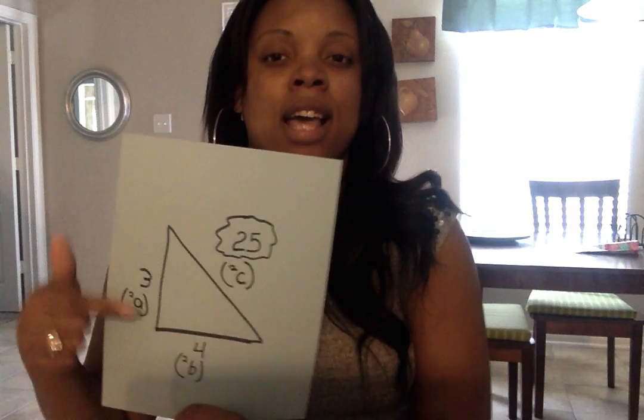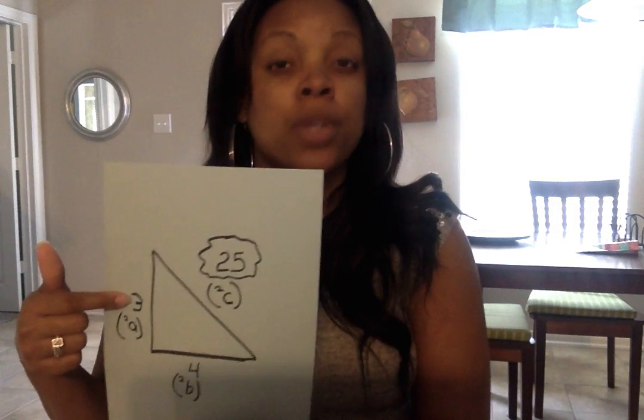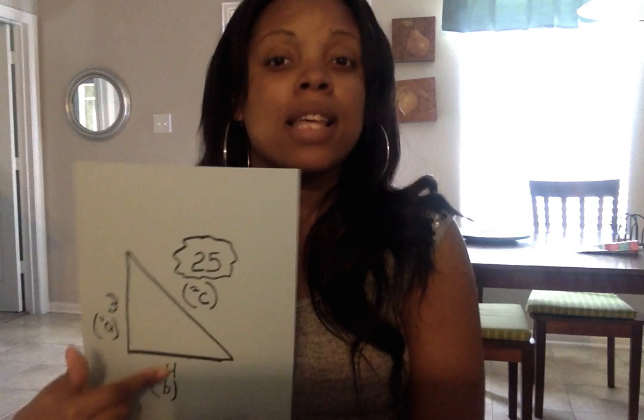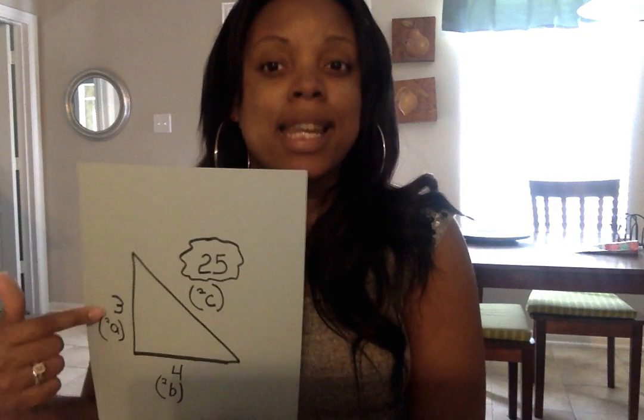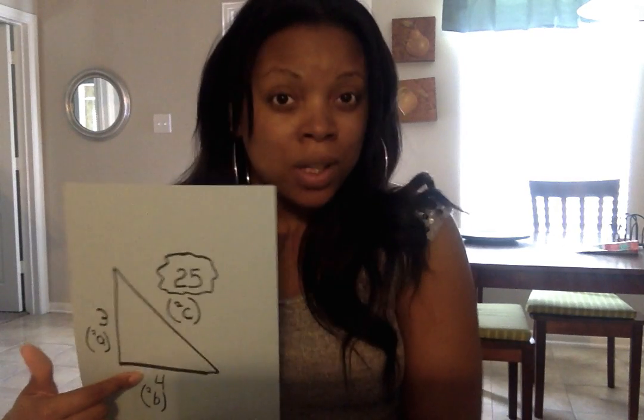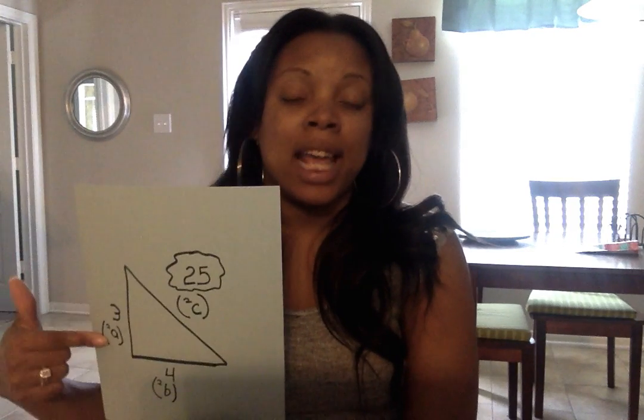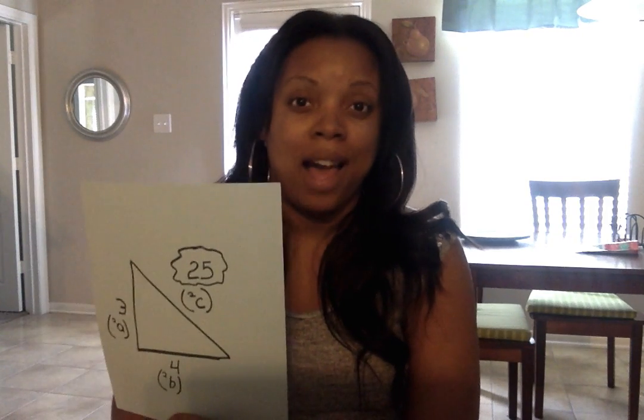Let's look at it in a little bit more detail. A squared: three times three is nine. Plus b squared: four times four is 16. Nine plus 16 will total up to 25. So now we know the unknown — we know what this length is, which is 25. A squared plus b squared will always equal c squared, which is 25.